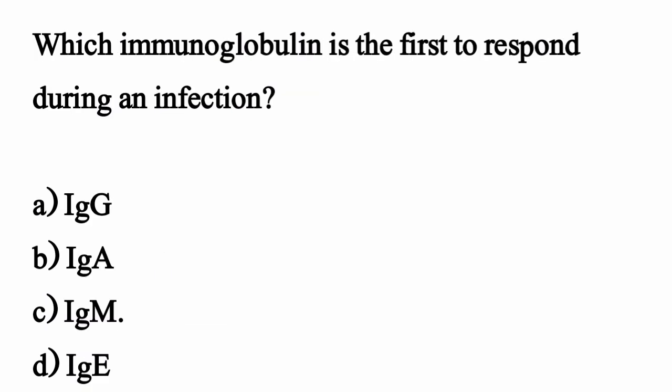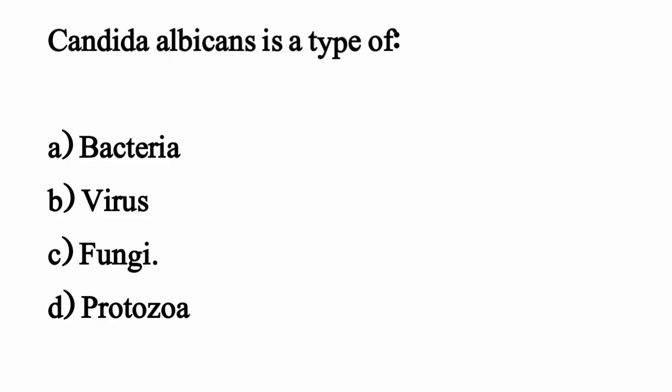Which immunoglobulin is the first to respond during an infection? The correct option is option C: IgM. Candida albicans is a type of — the correct option is option C: fungi.